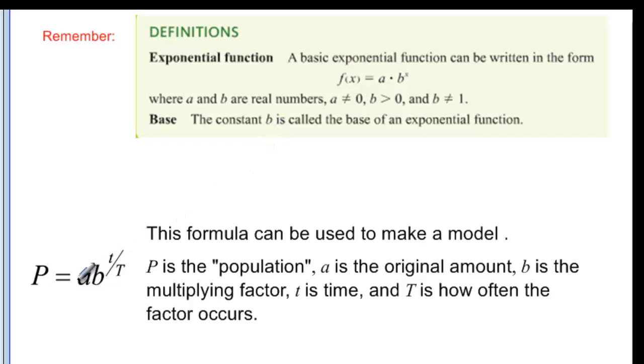So there is a formula, P equals a times b to the little t over big T, that we can use to make models. P is, we'll put it in quotes, population, because it's not always a population of something, but it's an amount of things, but it's often population, so we'll call it P.